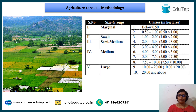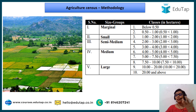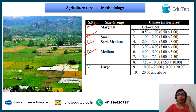Farmers are classified into size groups based on the area of land they hold: marginal is below 0.5 hectares to 1 hectare, small is 1 to 2 hectares, semi-medium is 2 to 4 hectares, medium is 4 to 7 hectares or up to 10 hectares, and large is 10 hectares and above.